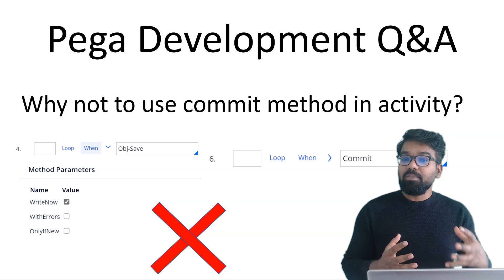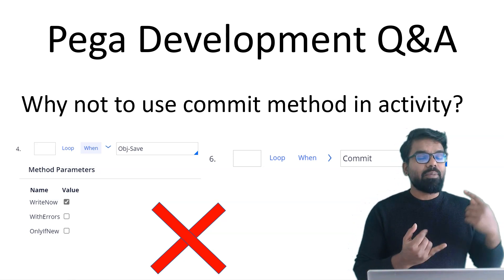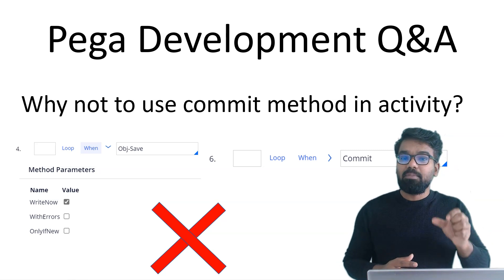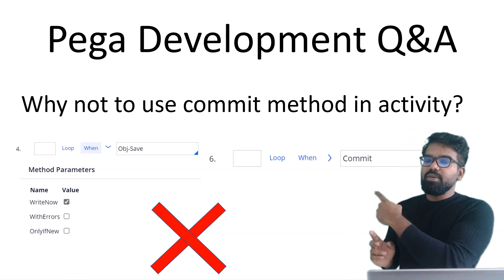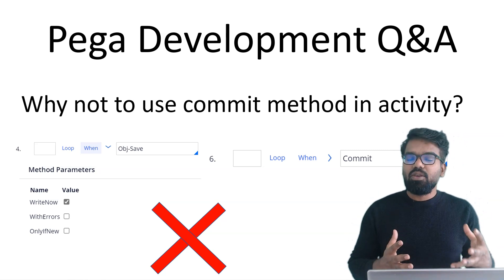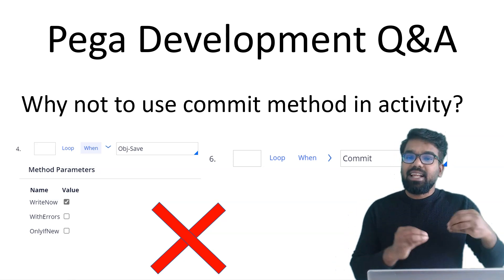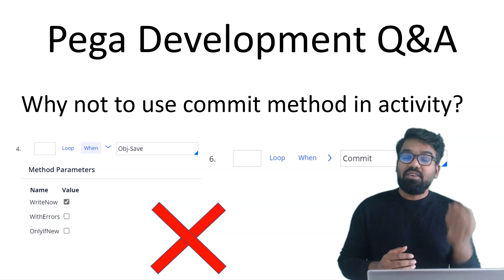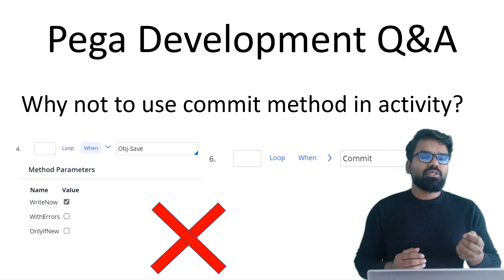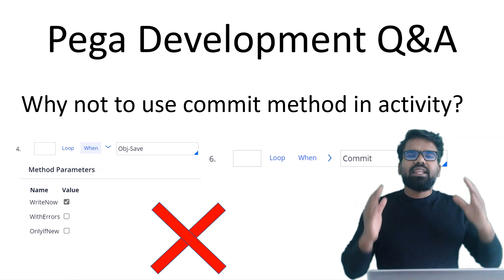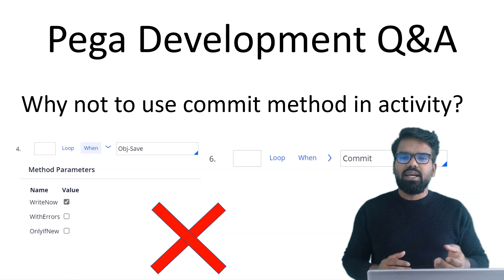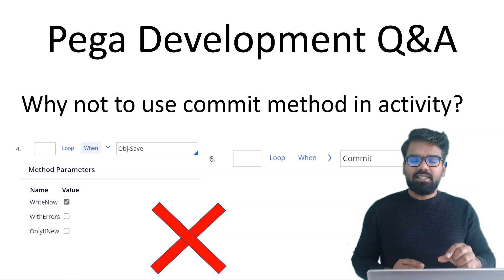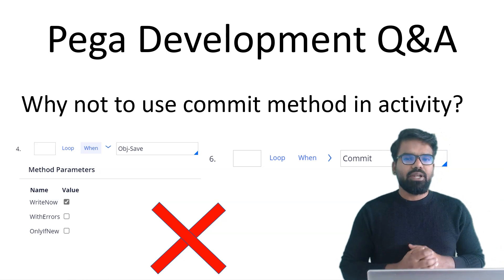Pega always recommends us not to use the commit operation or commit method, as well as the right now method parameter. As you can see in the obj save, you usually have an option to do the right now to commit it as soon as possible. Pega provides a severe warning whenever you use that option. Only in very rare situations can you use that, but most of the time you should not use the commit method or the right now parameter.